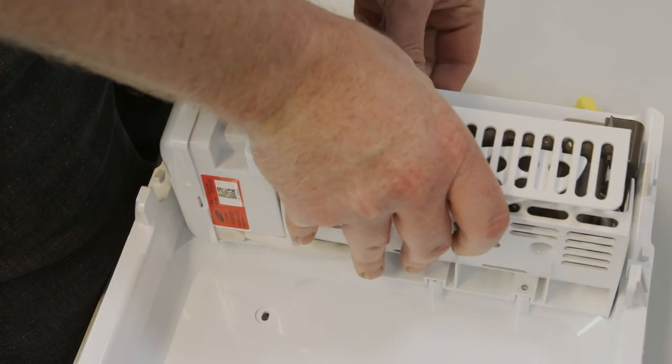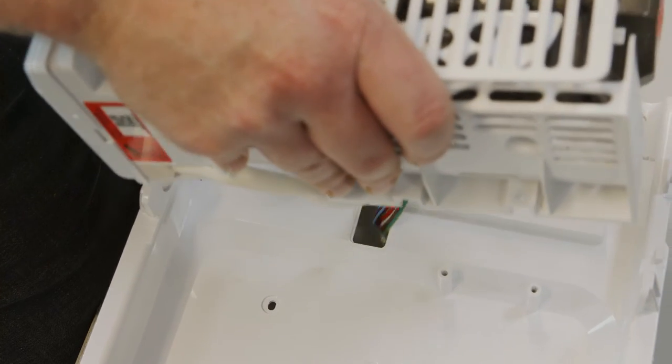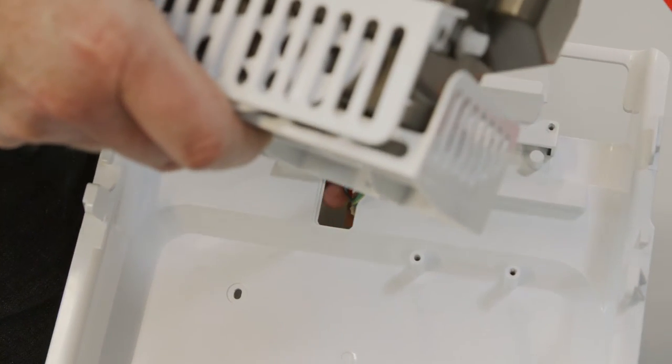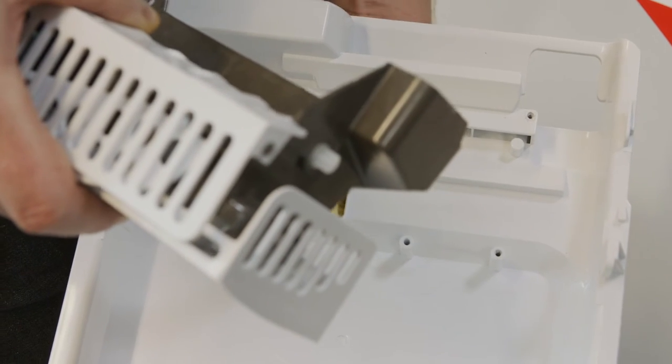Now you can pull the ice maker away. Take care when pulling the wires and plug through the small square opening. Make sure you don't damage them.